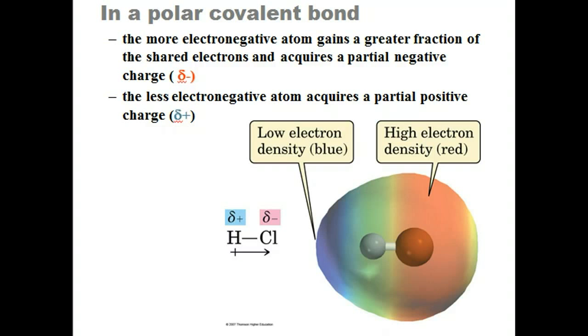The bond has a slight negative side and a slightly positive side. This is called a dipole. The direction of the dipole from positive to negative is indicated by an arrow. The molecule shown here, hydrochloric acid, has a very strong dipole.